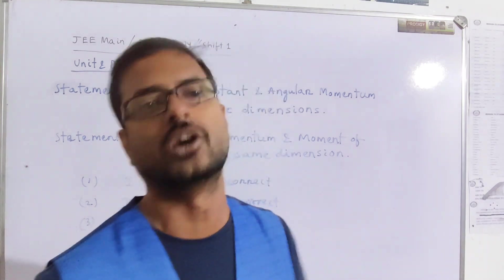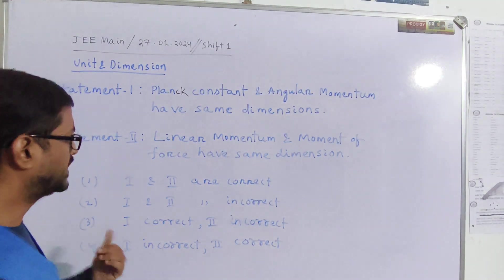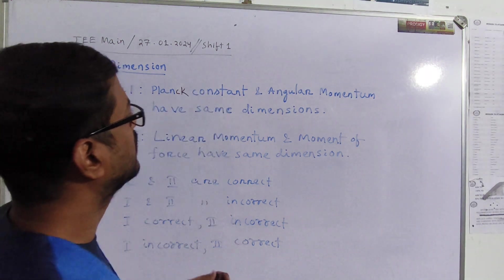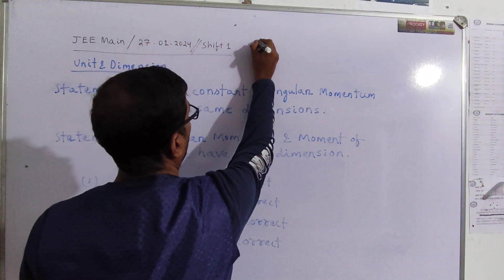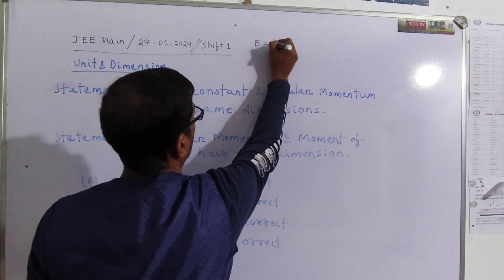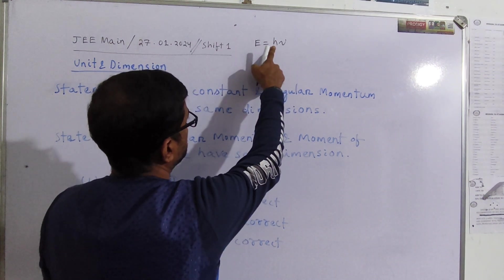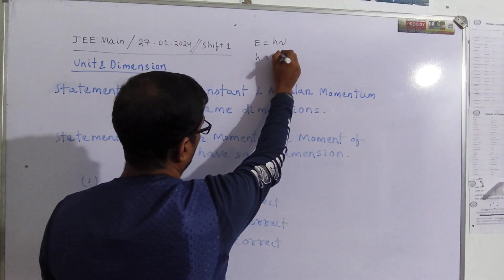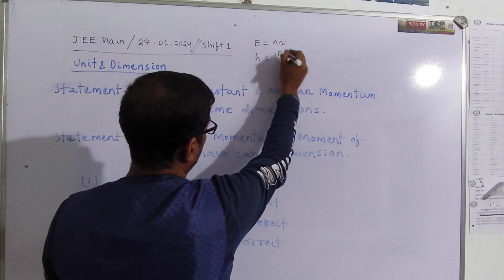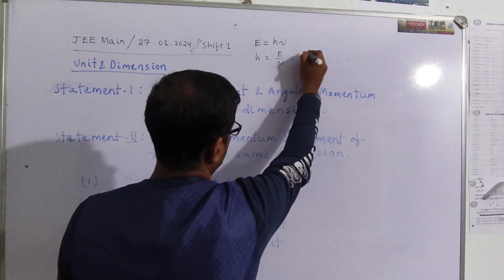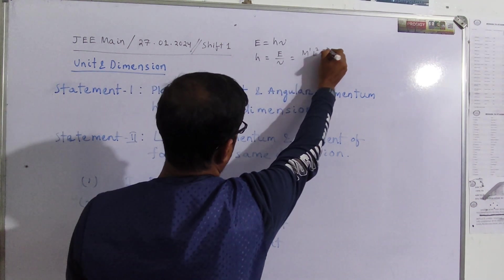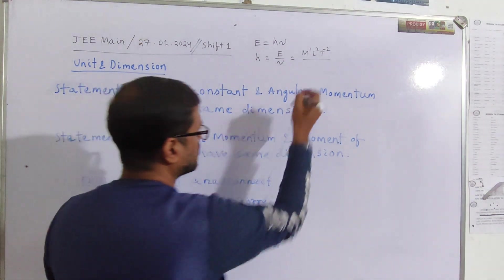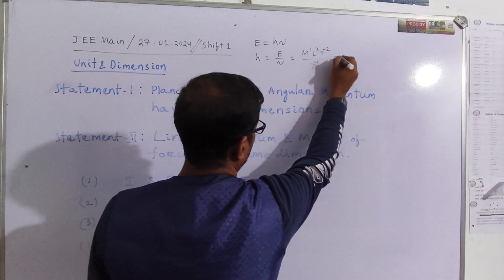So let us discuss the dimensional formula of statement one, that is Planck's constant. You know Planck's constant formula, E is equal to hν. E is energy, h is Planck's constant, ν is frequency. So h is equal to E upon ν. Energy, you know, the dimensional formula is M1 L2 T minus 2.